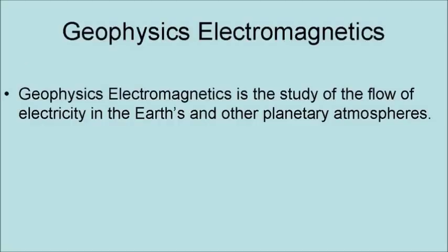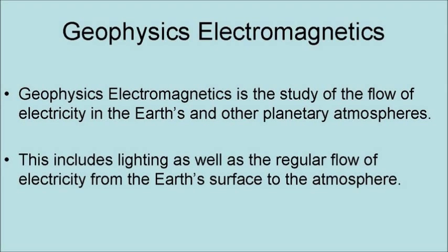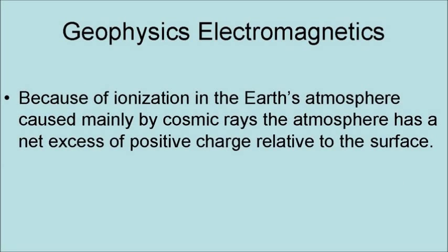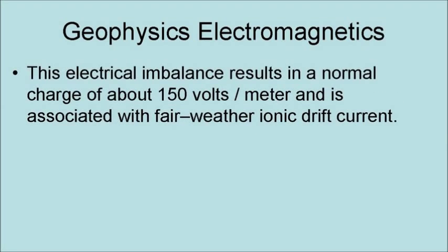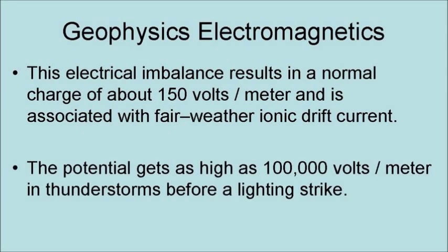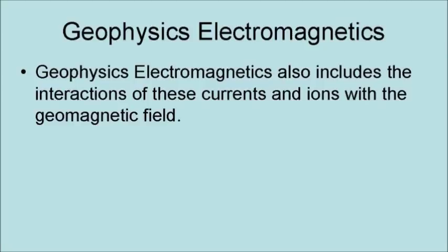Geoelectromagnetism is the study of the flow of electricity in the Earth and other planetary atmospheres. This includes lightning as well as the regular flow of electricity from the Earth's surface into the atmosphere. Because of ionization in the Earth's atmosphere caused mainly by cosmic rays, the Earth's atmosphere has a net excess positive charge relative to the surface. This electrical imbalance results in a normal charge of about 150 volts per meter and is associated with a fair-weather ionic drift current. However, this potential gets as high as 100,000 volts per meter in thunderstorms before a lightning strike.